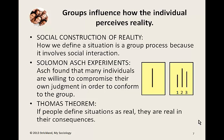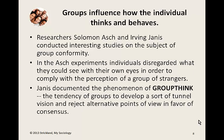The Thomas theorem applies here. From W.I. Thomas, it says: if people define situations as real, they are real in their consequences. This is important because if people in groups create an idea of what is socially real, and individuals who even know the group is wrong are often willing to conform to the group's incorrect position, they will follow up with behaviors that may have negative consequences. So groups influence how the individual thinks and behaves.